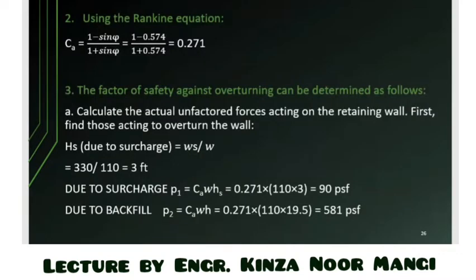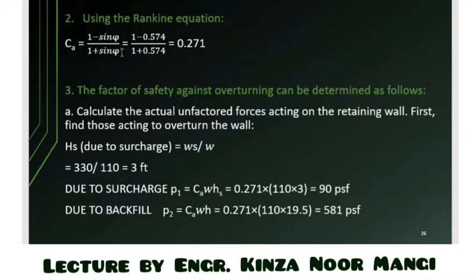Now we calculate the Rankine's coefficient of active pressure Ka. Ignoring passive pressure initially, using the angle of internal friction of 35 degrees, Ka comes out to be 0.271.